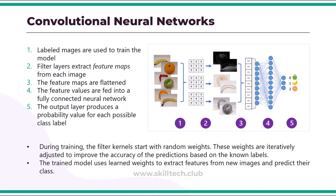The following diagram illustrates how a CNN for an image classification model works. There are five steps: first, images with known labels like banana, apple, and oranges are fed into the network to train the model. Second, one or more layers of filters are used to extract features from each image. The filter kernels start with randomly assigned weights and generate arrays of numeric values called feature maps. In step three, these feature maps are flattened into a single-dimension array of feature values. In step four, the feature values are fed into the fully connected neural network.